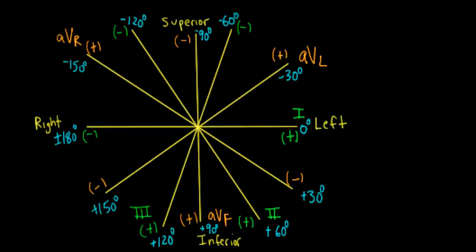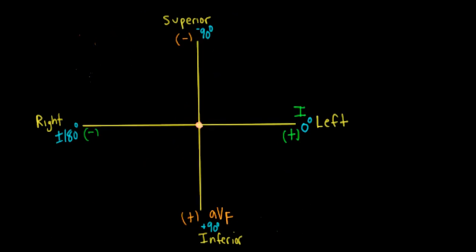Here is the frontal plane with our six limb leads. Note that leads V1 and AVL have their positive poles pretty close to each other on the left side. We're going to strip away four of the six extremity leads, leaving leads 1 and AVF because they are perpendicular pairs.